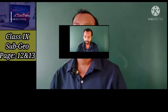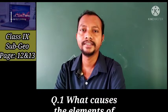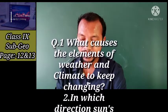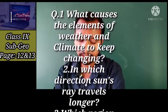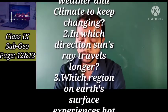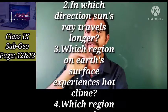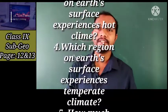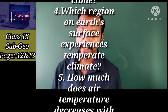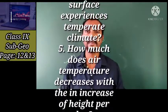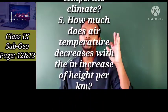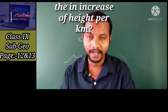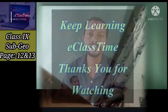First question: what causes elements to keep on changing? Second question: in which direction do sun's rays travel longer? Third: which region on the earth's surface experiences hot climate? Fourth: temperate climate is enjoyed by which region? Fifth: how much does air temperature decrease with an increase of one kilometer in height? Try to answer these. In the next video I will tell you the answers and we shall continue. Till then, take care, stay safe, thank you.